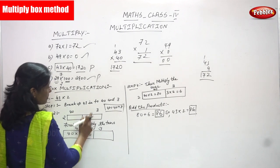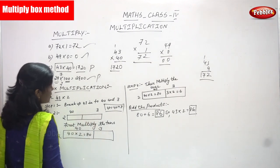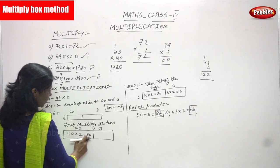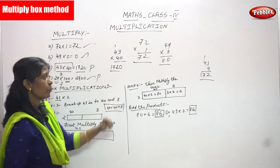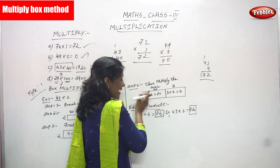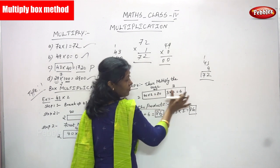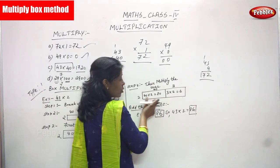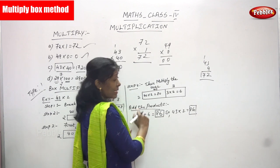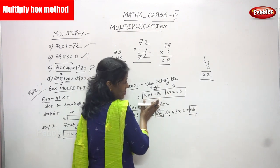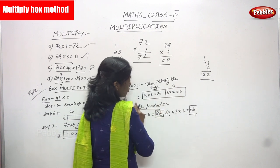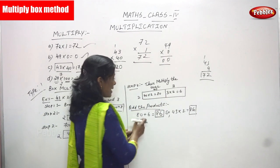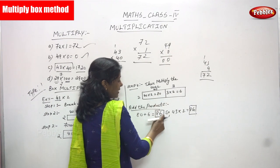Step 3: first multiply the tens. 40 is in the tens place, so 40 into 2 gives 80 — write that in the box. Step 4: multiply the ones. 3 into 2 gives 6 — write that in its box. Finally, add the products: 80 plus 6 equals 86. So 43 into 2 equals 86.